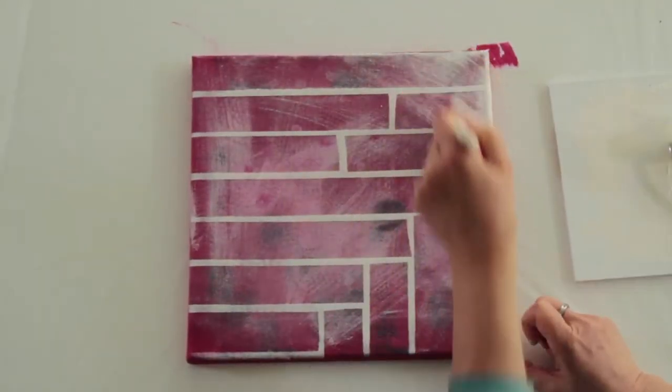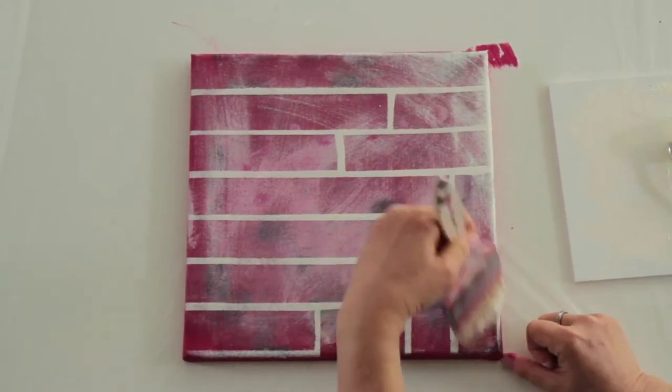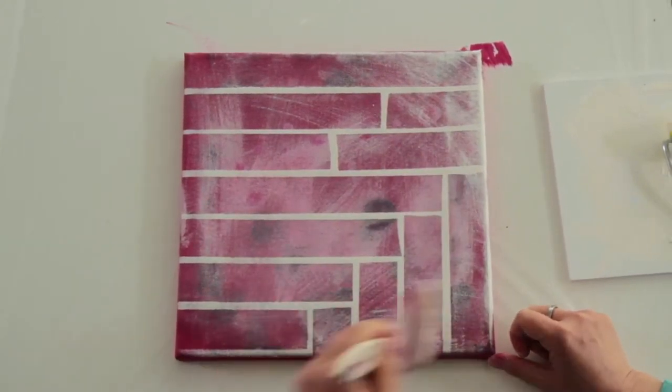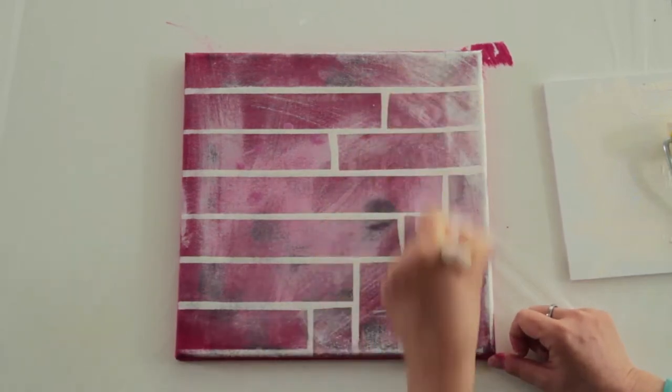To reinforce the vintage effect, wipe the surface unevenly once again with white acrylic paint using a white bristle brush.